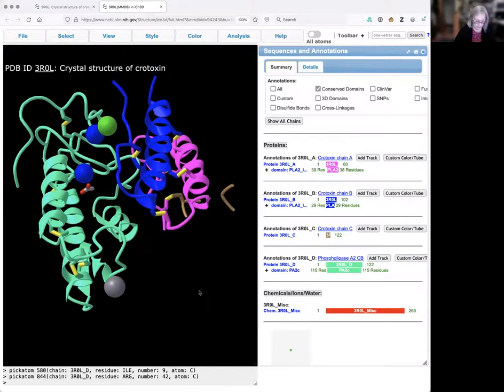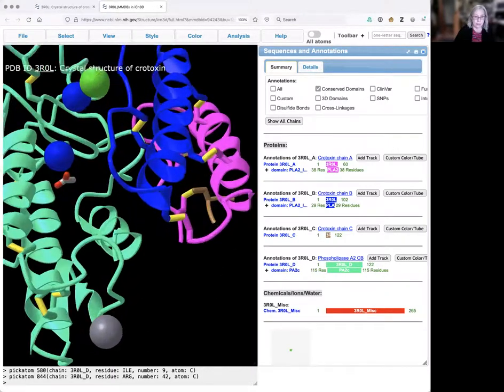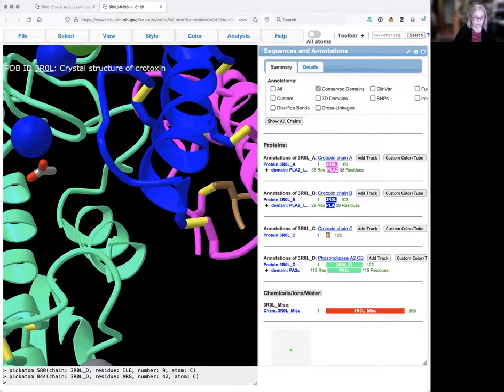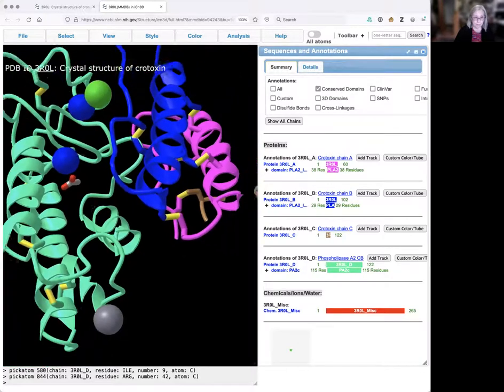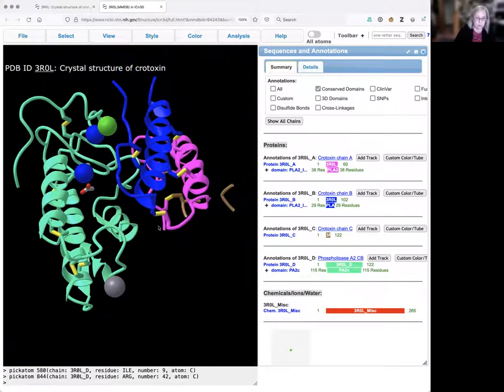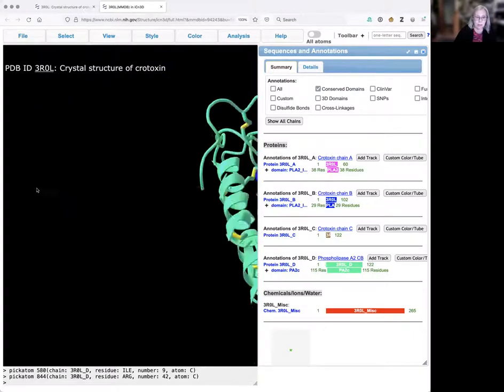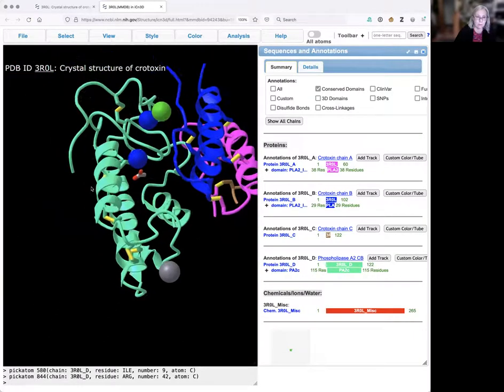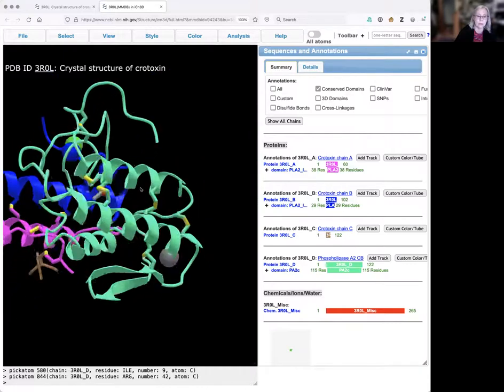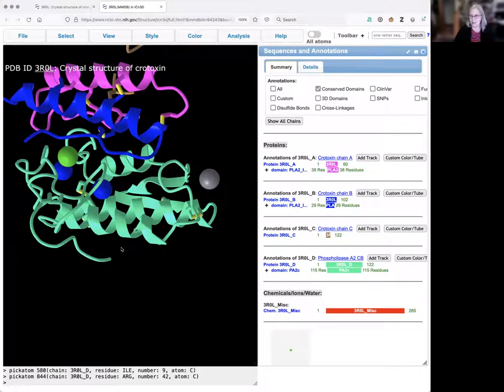So those are the basic manipulations. We can zoom in, we can zoom out. We can hold the control key down and drag. Or we can grab the structure and we can turn it. It's all for now.